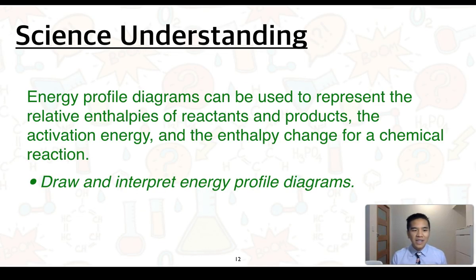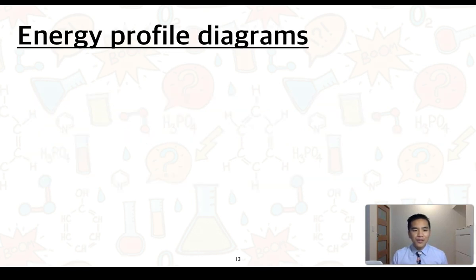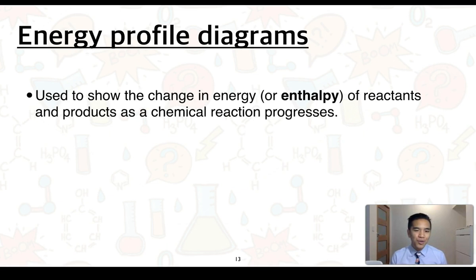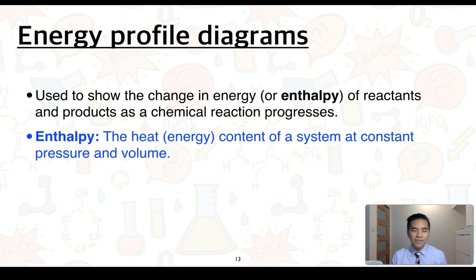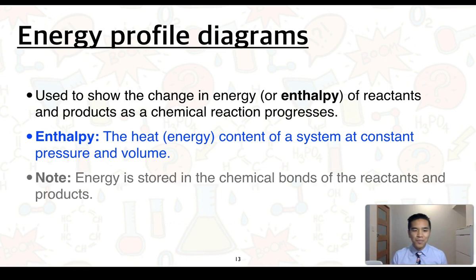The second science understanding we're going to look at is energy profile diagrams can be used to represent the relative enthalpies of reactants and products, the activation energy and the enthalpy change for a chemical reaction. You need to know how to draw and interpret energy profile diagrams, and you guys might remember us doing this last year. So energy profile diagrams are used to show the change in energy or enthalpy of reactants and products as a chemical reaction progresses. We can define enthalpy as the heat or energy content of a system that occurs at constant pressure and volume. It's important to note that this energy is stored within chemical bonds of reactants and products.